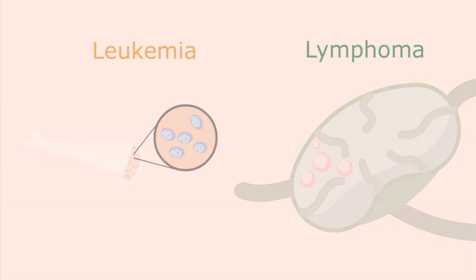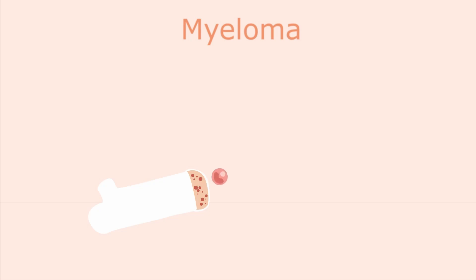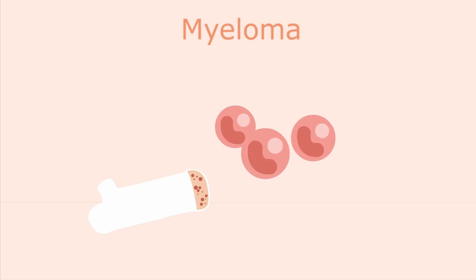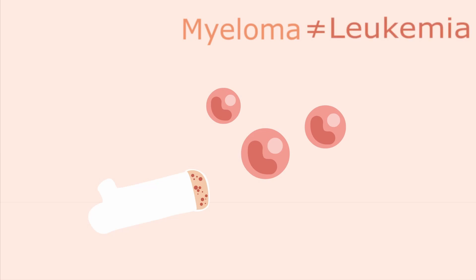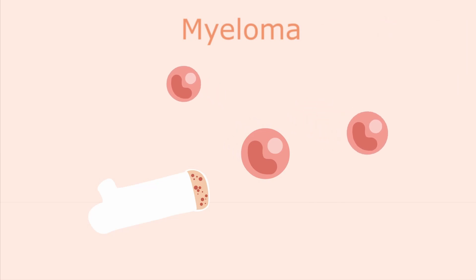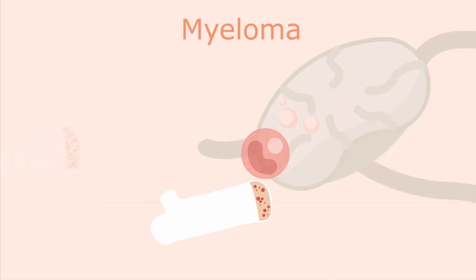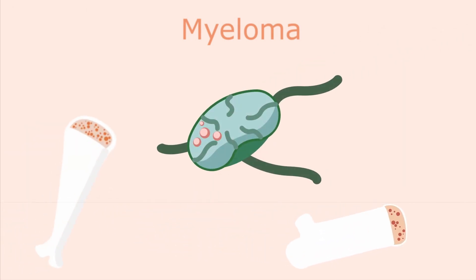Lastly, let's take a look at myeloma. Myeloma can be a little bit tricky to understand because here the cancer originates from plasma cells that reside in the bone marrow, but it's still different from leukemia. I'll try to show why with this animation.